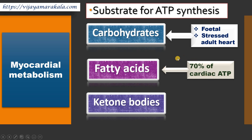Even though fatty acid oxidation is the major source of ATP for myocardial metabolism, it is said that fat burns in the flame of carbohydrates. That means even though fatty acids give acetyl-CoA, it has to enter the citric acid cycle where oxaloacetate is required. An adequate amount of oxaloacetate is required, and each intermediate of the citric acid cycle is anaplerotic. This oxaloacetate is generated again from carbohydrates — that is from pyruvate, which is generated from the glycolytic pathway of carbohydrates.